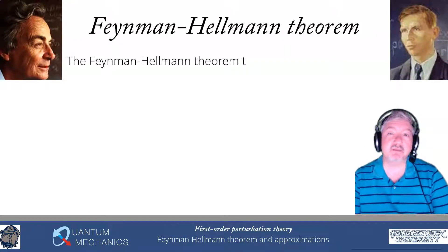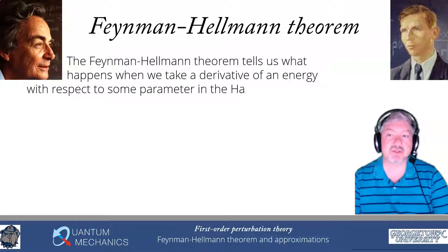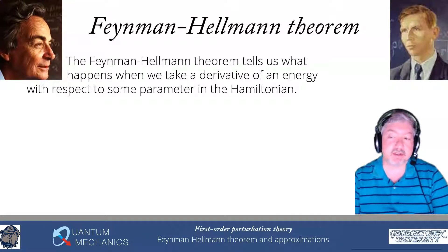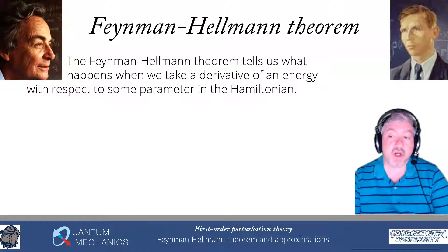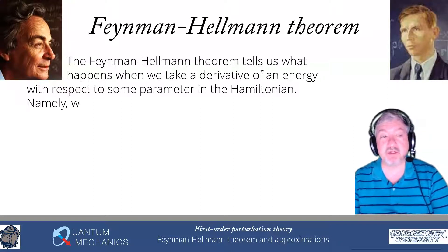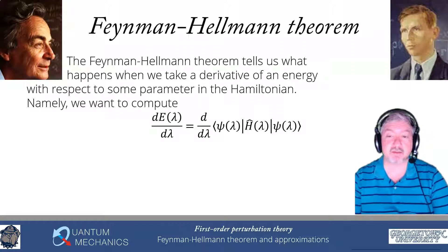The Feynman-Hellman theorem tells us what happens to a matrix element when we take the derivative — in particular, when we take the derivative of a matrix element that gives us an energy with respect to some parameter in the Hamiltonian. If my Hamiltonian depends on some parameter, like the kinetic energy depends on mass, or the Coulomb interaction depends on e squared, or I introduce a parameter as in Feynman integration, then the derivative with respect to that parameter is related to the derivative of the energy with respect to the parameter.